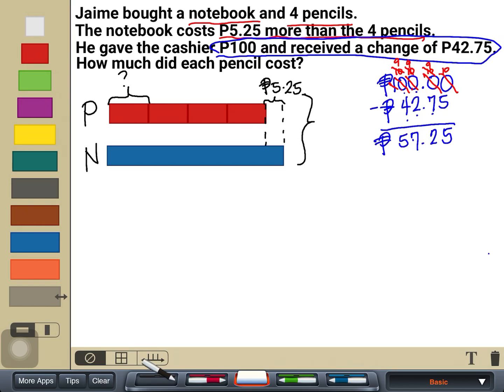That is the total amount of these five items. 57 pesos and 25 centavos. Now that we have this model completely labeled, let us now find what we are looking for. 57 pesos and 25 centavos is the total for all the five items that Jamie bought. We have to know first, how much is one pencil?